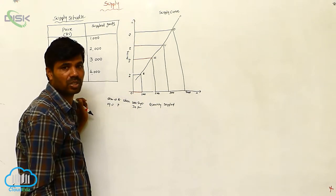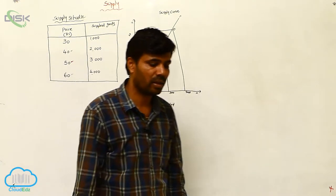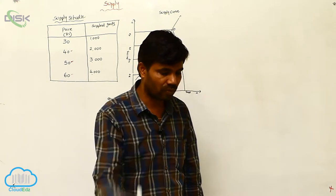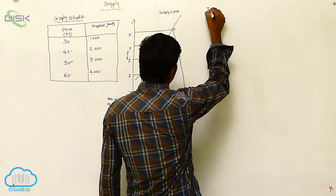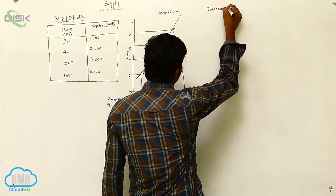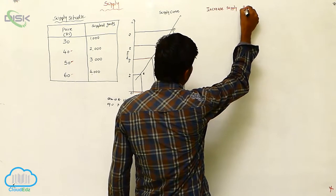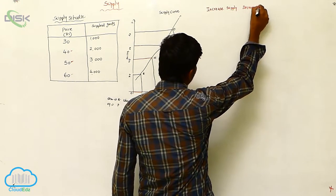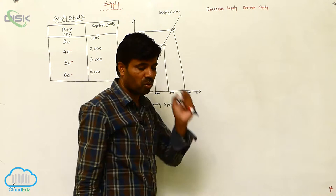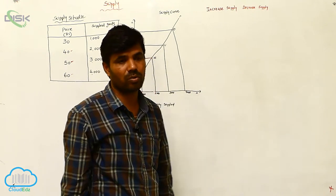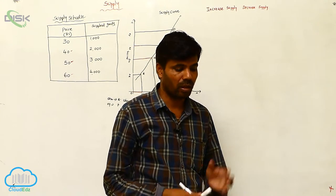So next topic is increasing in supply and decreasing in supply. So what is the reason for increase supply and decrease supply? Why, what is the reason why curves sometimes decreasing, sometimes increasing?